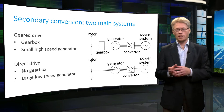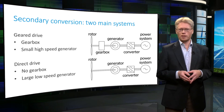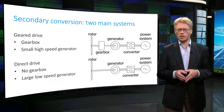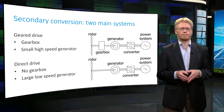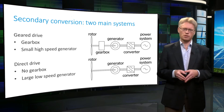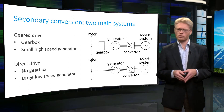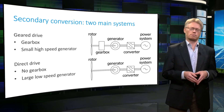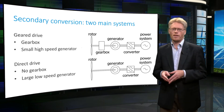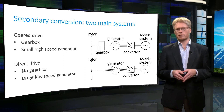In a direct drive system, the generator is directly driven by the main shaft of the wind turbine, so it rotates at a very low speed. The most important reason to develop direct drive systems is to get rid of the maintenance and failures of gearboxes. However, the consequence is that a large and expensive direct drive generator is needed.